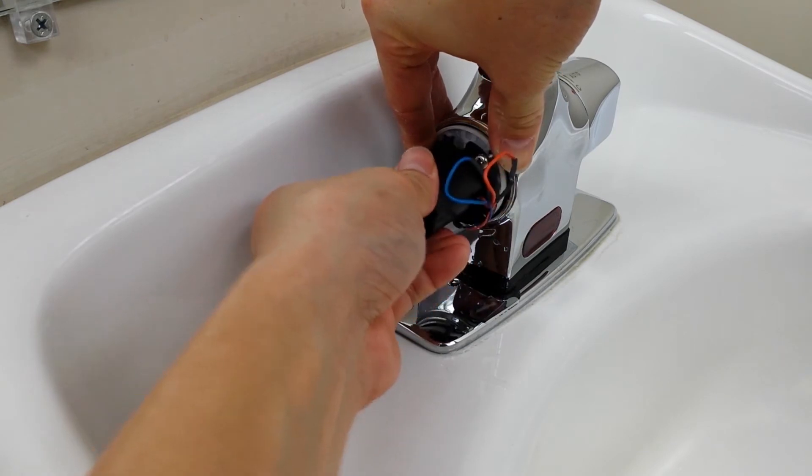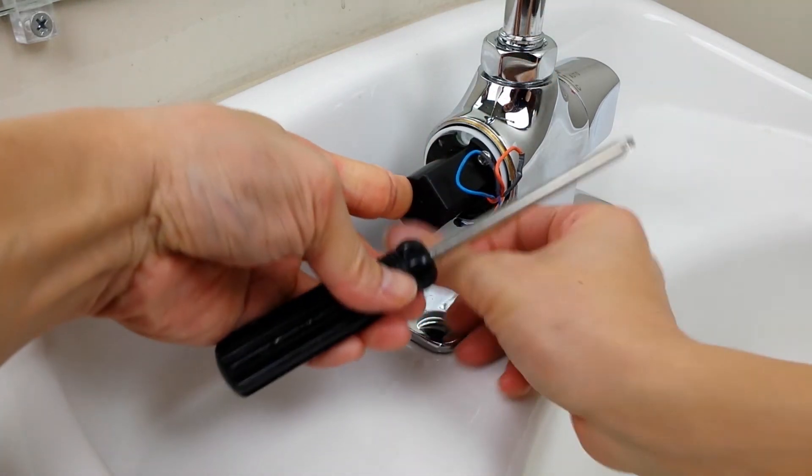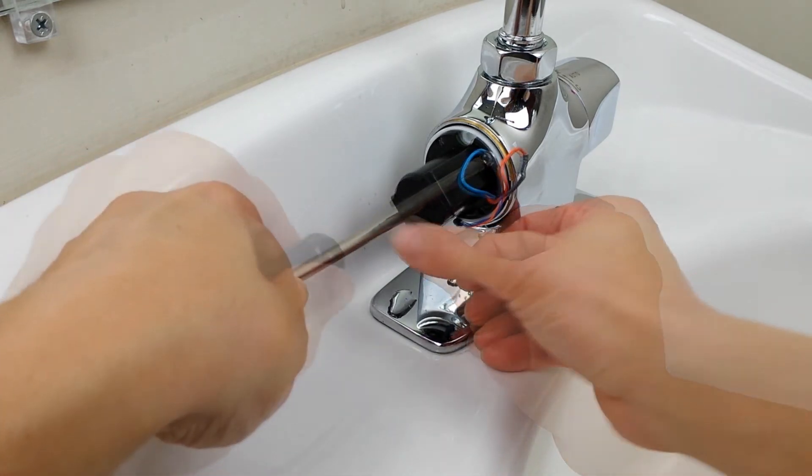Place the solenoid onto the control valve aligning the mounting holes. It's best to secure the solenoid by installing just two opposing screws.